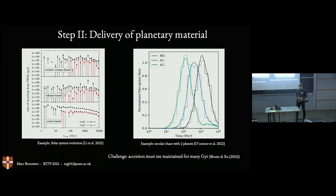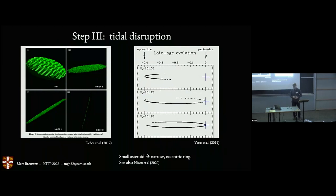Delivery from the Kuiper belt could be maintained for 10 giga years. There's a study by O'Connor, taking a planetesimal belt and two outer planets, showing that secular chaos can result in delivery lasting 10 giga years, with a decline in accretion rate of about one order of magnitude, which matches the constraints.